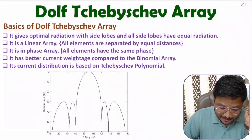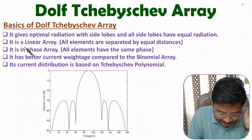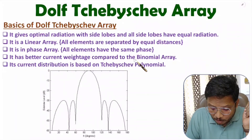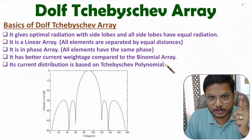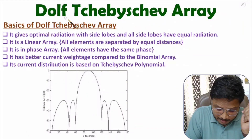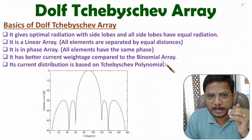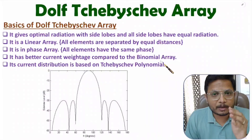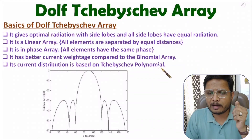These three points are essential: Dolph-Chebyshev array optimizes side lobes, it is a linear array, and it is an in-phase array. Dolph-Chebyshev array has better current weightage compared to binomial array. Binomial array has non-uniform current distribution, and Dolph-Chebyshev array also has non-uniform current distribution, but with better current weightage. Its current distribution is based on Chebyshev polynomial.